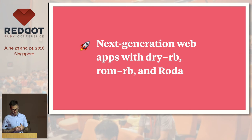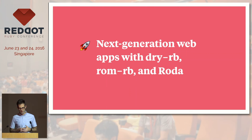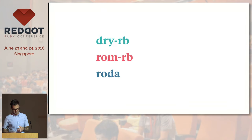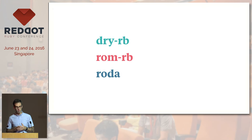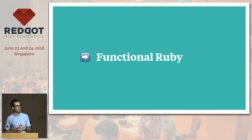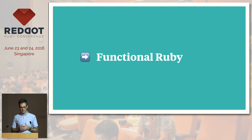We'll cover a lot of ground today and look at a lot of code, but I hope to give you a new sense for what's possible with Ruby and inspire you to look at web apps from a fresh perspective. We'll look at three things: DryRB, a new collection of modern single-purpose Ruby gems; ROMRB, a flexible persistence toolkit for Ruby; and Rota, which offers an expressive approach to routing. We'll also combine these with a hybrid of functional and object-oriented programming that we call functional Ruby.